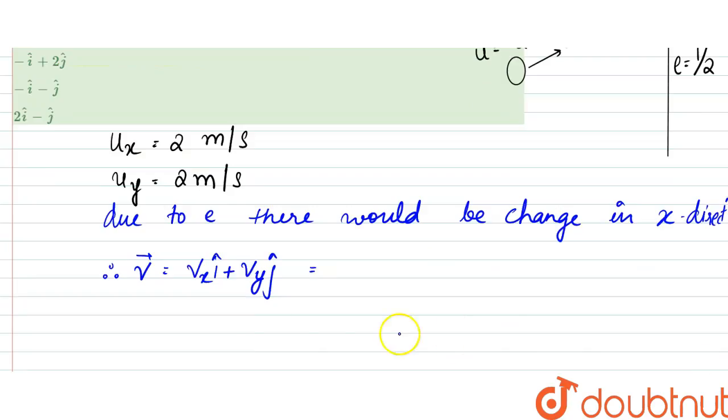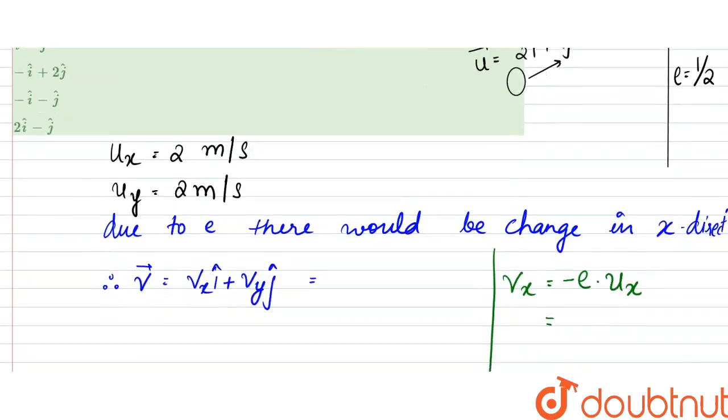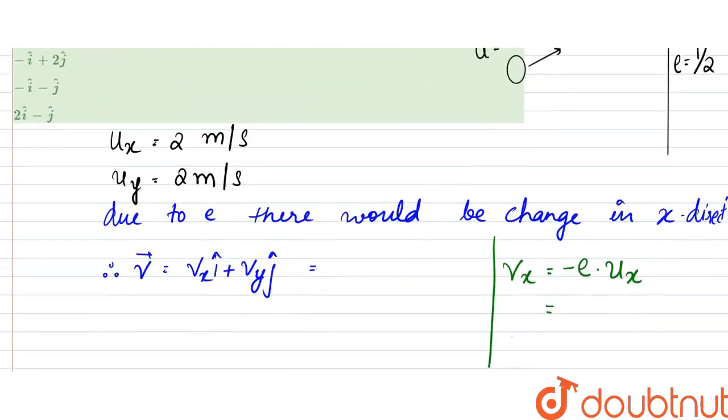So v_x would be equal to e into u_x, coefficient of restitution into the initial velocity. Since that would be in opposite direction, this would be negative obviously. And u_x is minus 2 meters per second.